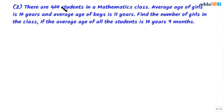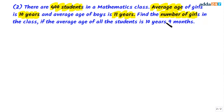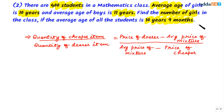Let's take one more example. There are 400 students in a class of mathematics. The average age of girls is 10 years and the average age of boys is 11 years. We need to find the number of girls in the class, given that the average age of all students is 10 years and 9 months.